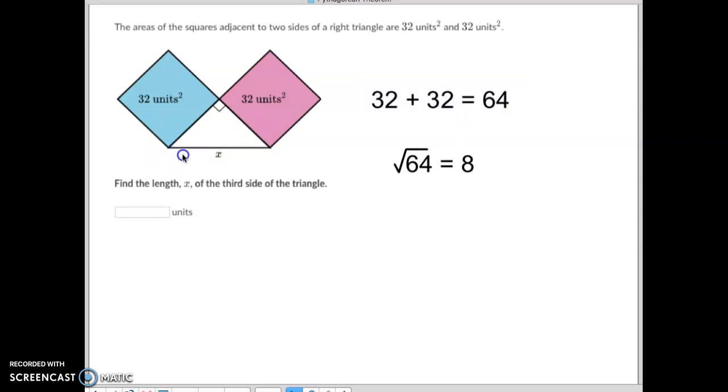64 would be the area of that square right there, but they're not asking for the area of that square. They're asking for the length of this line right there, so we do have to take square root of that, which is simply 8. That's all there is to it, guys. Good luck. Bye-bye.